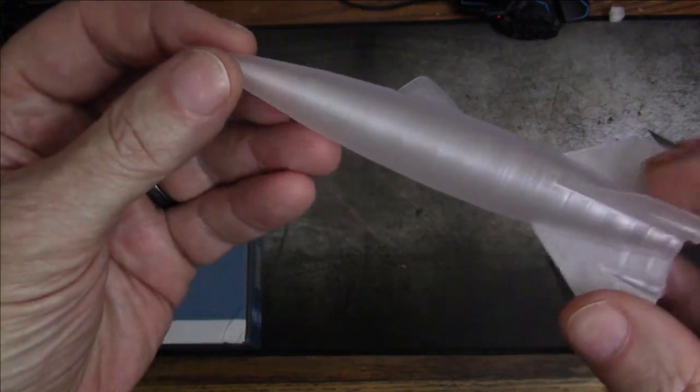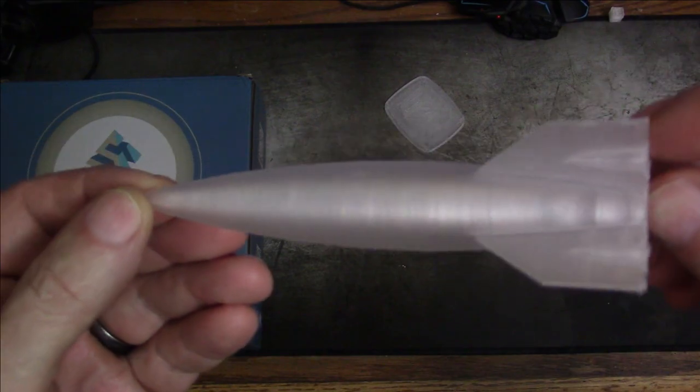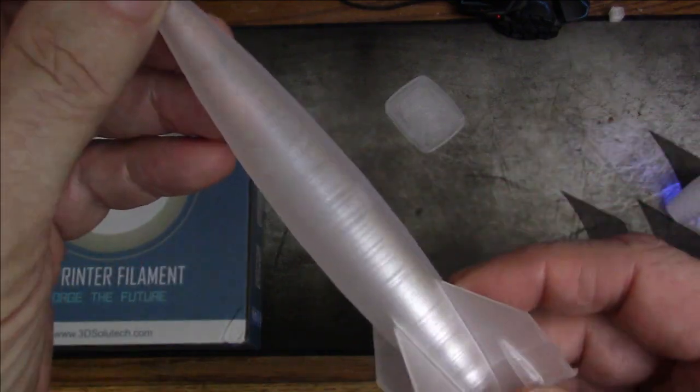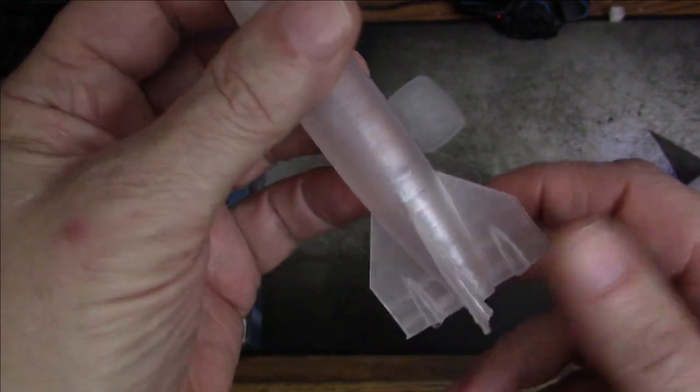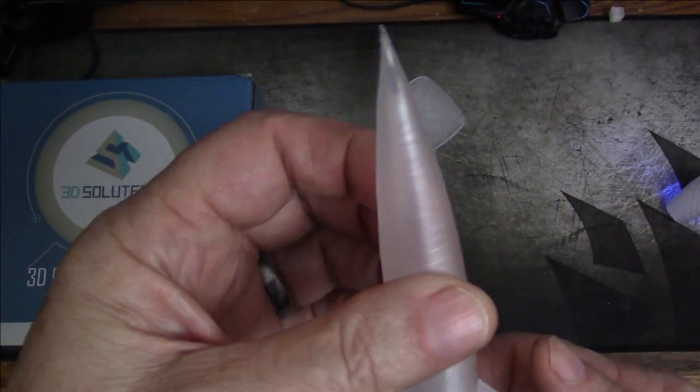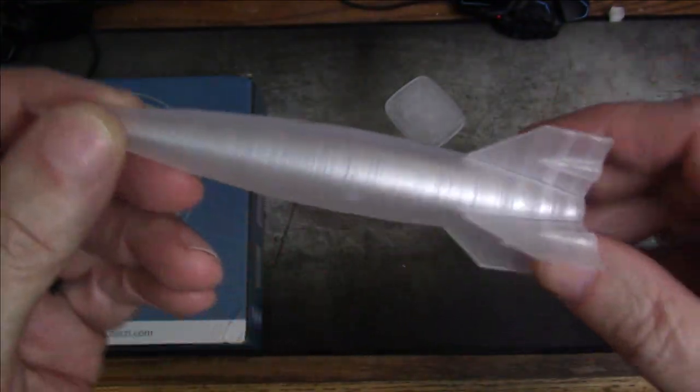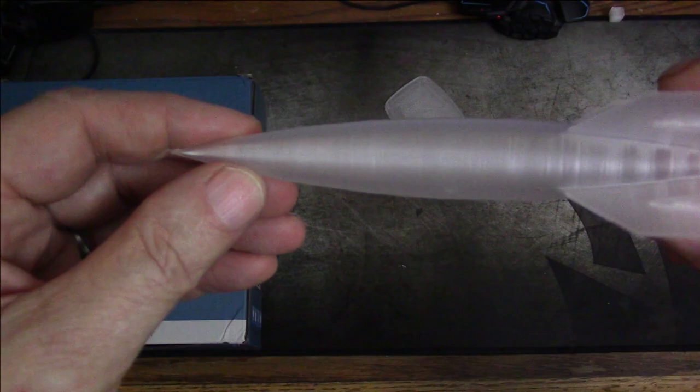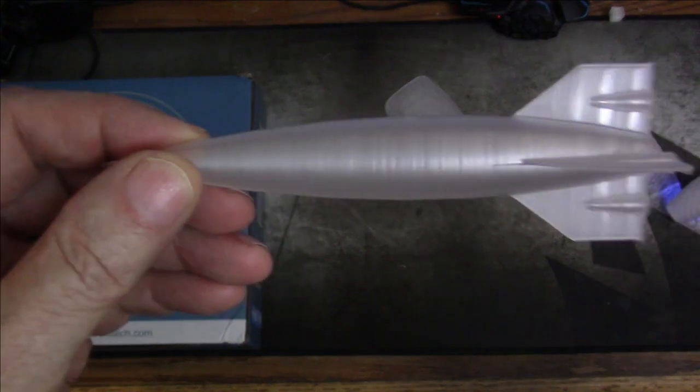And my rocket printed really nice. Now this rocket was not in 0.32 layer height. It was in 0.20 layer height, so it does look a little bit finer. And I printed it with a brim and in vase mode. So really nice. I like that rocket. That rocket turned out really good. That one may be a keeper. Like I need my 27th rocket, right?